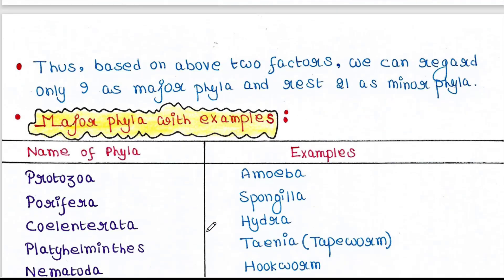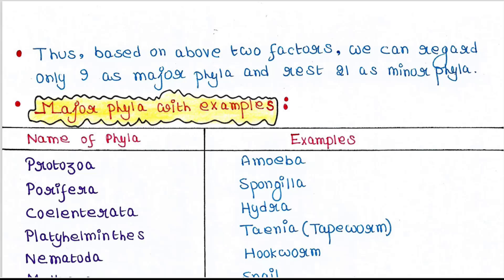Thus, based on the above two factors, we can regard only nine as major phyla and the rest 21 as minor phyla.